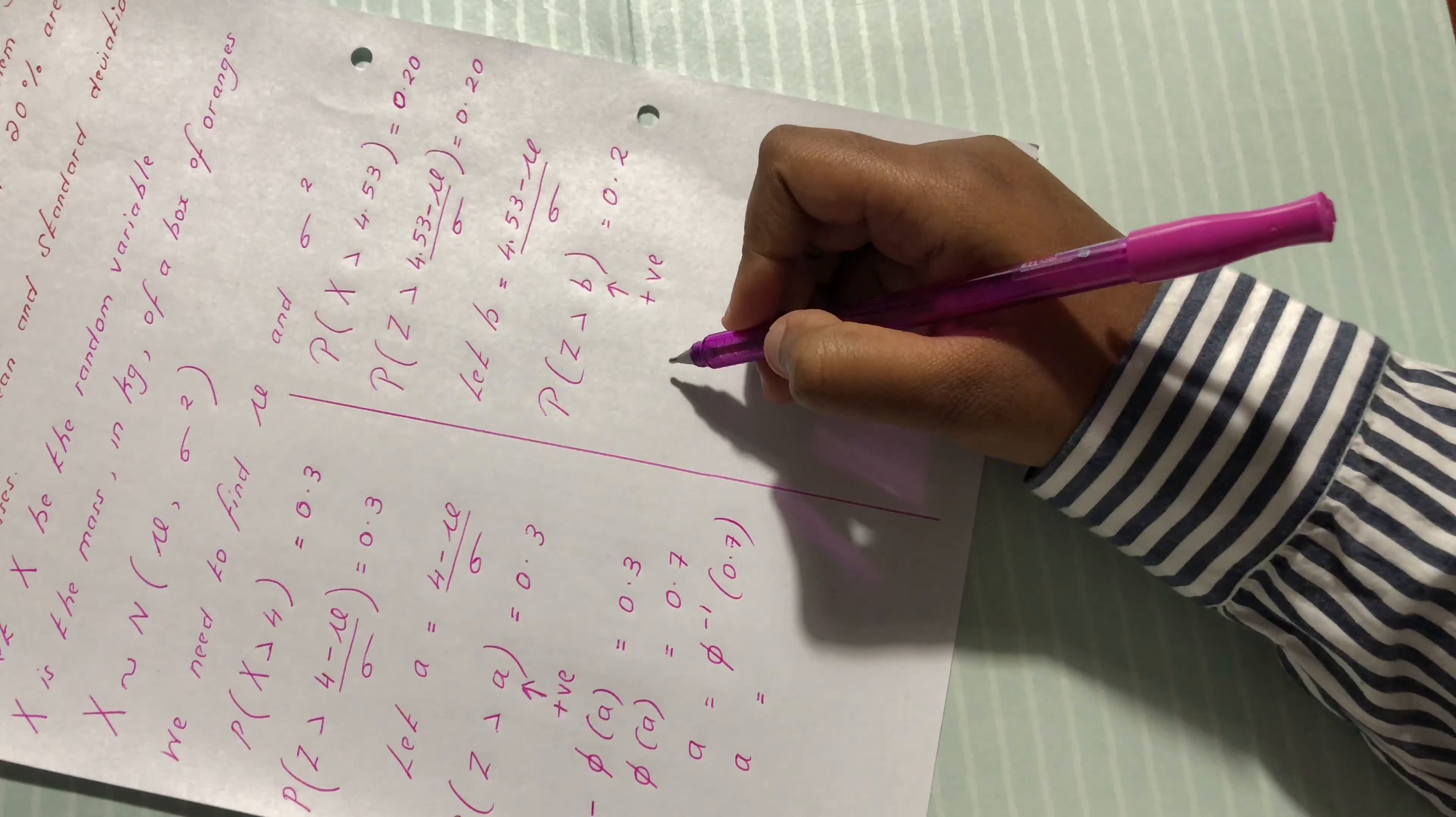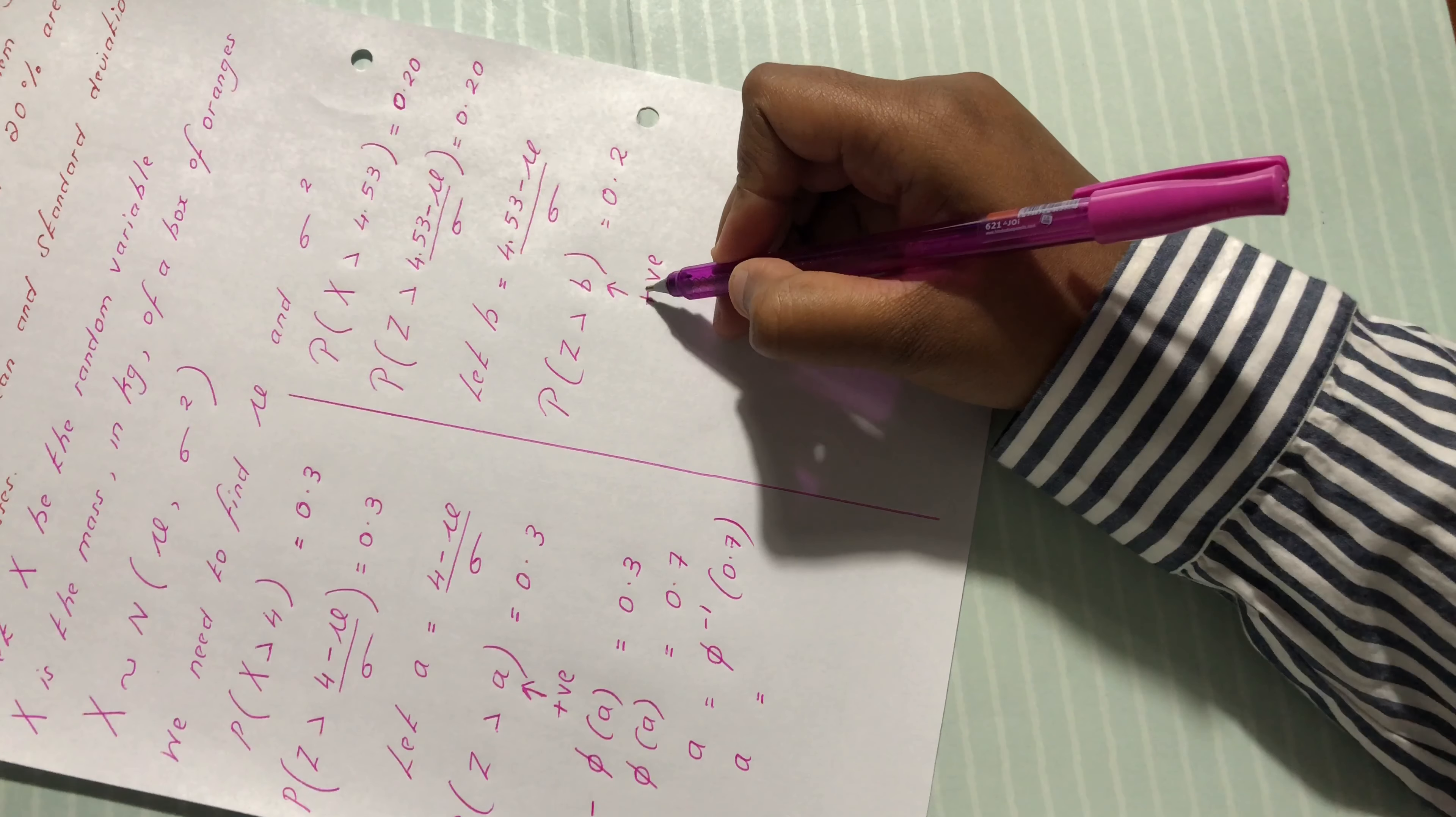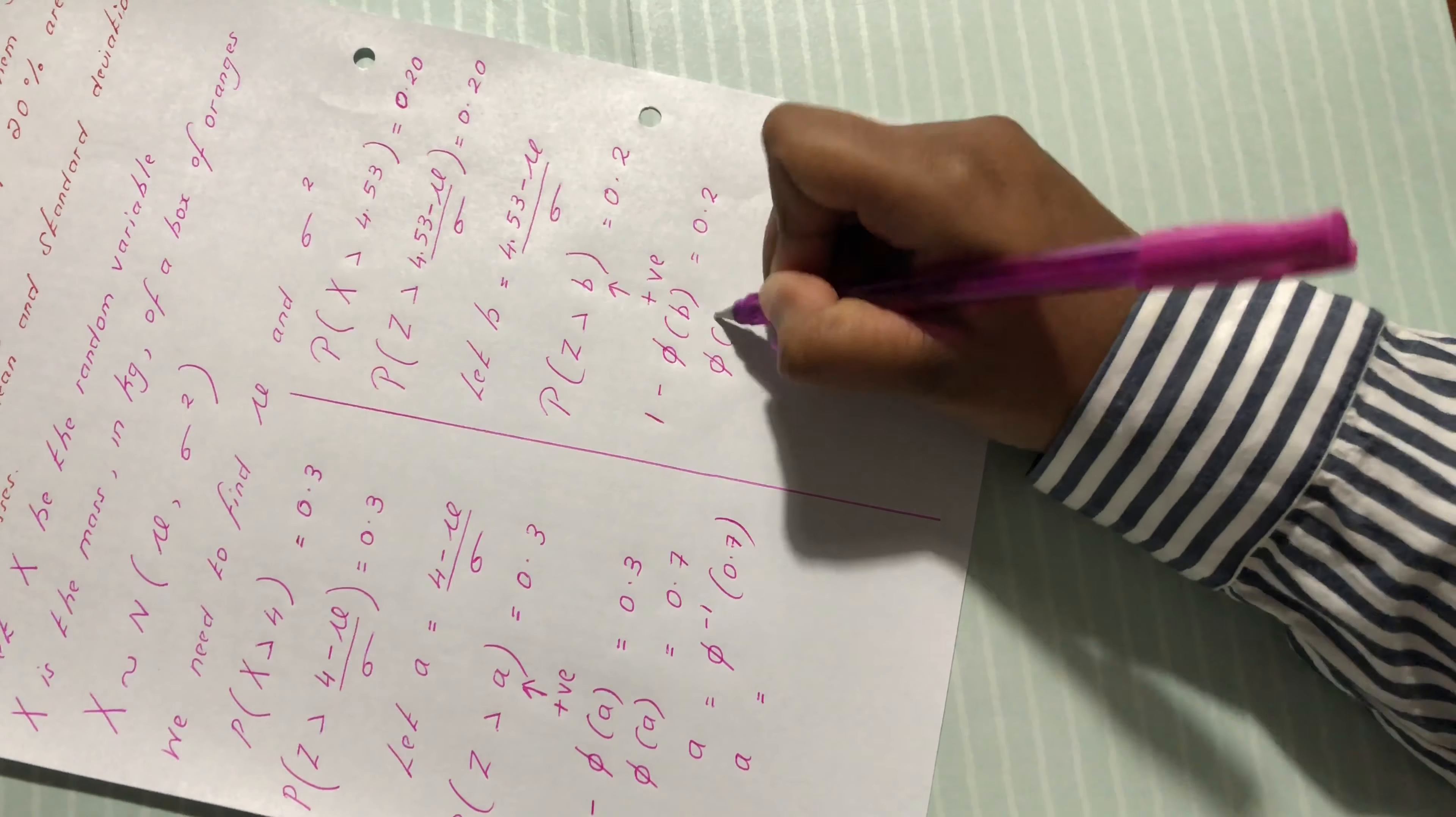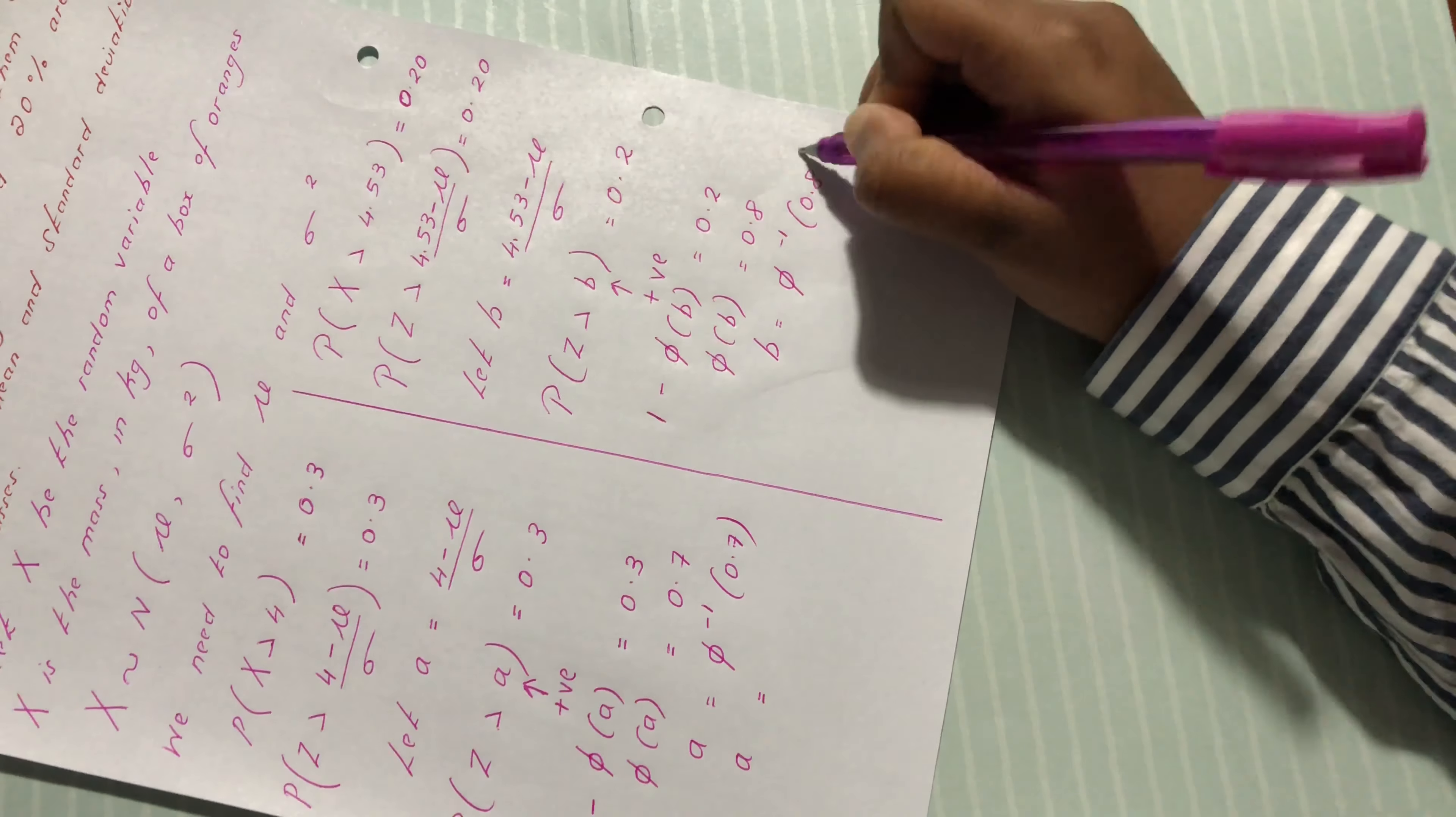For this one, we use the same principle. Greater than b, where probability is less than 0.5, so b is positive. 1 minus phi of b equals 0.2, so we have phi of b equals 0.8. b is phi inverse of 0.8.